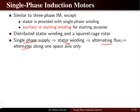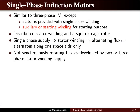When single-phase supply is given to the stator winding, the flux produced is alternating in nature and alternates along one space axis only. In three-phase induction motors, a rotating magnetic field is produced, making them self-starting. But in single-phase induction motors, the flux produced is alternating — not rotating — and alternates in only one space axis, so a rotating magnetic field is not produced.